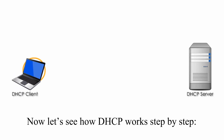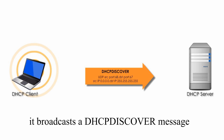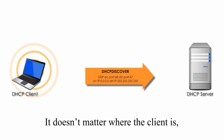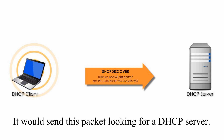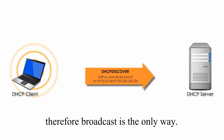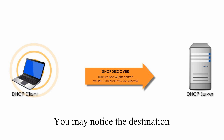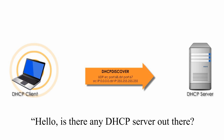Now let's see how DHCP works, step by step. Step 1: whenever a client computer boots up, it broadcasts a DHCP Discover message. It doesn't matter where the client computer is — at an airport, at home, in the desert, or in the jungle — it sends this packet looking for a DHCP server. The client has no idea if there is any DHCP server nearby, so broadcast is the only way. You may notice the destination IP address is 255.255.255.255. The DHCP Discover packet simply says: 'Hello, is there any DHCP server out there? I want to connect to the internet.'